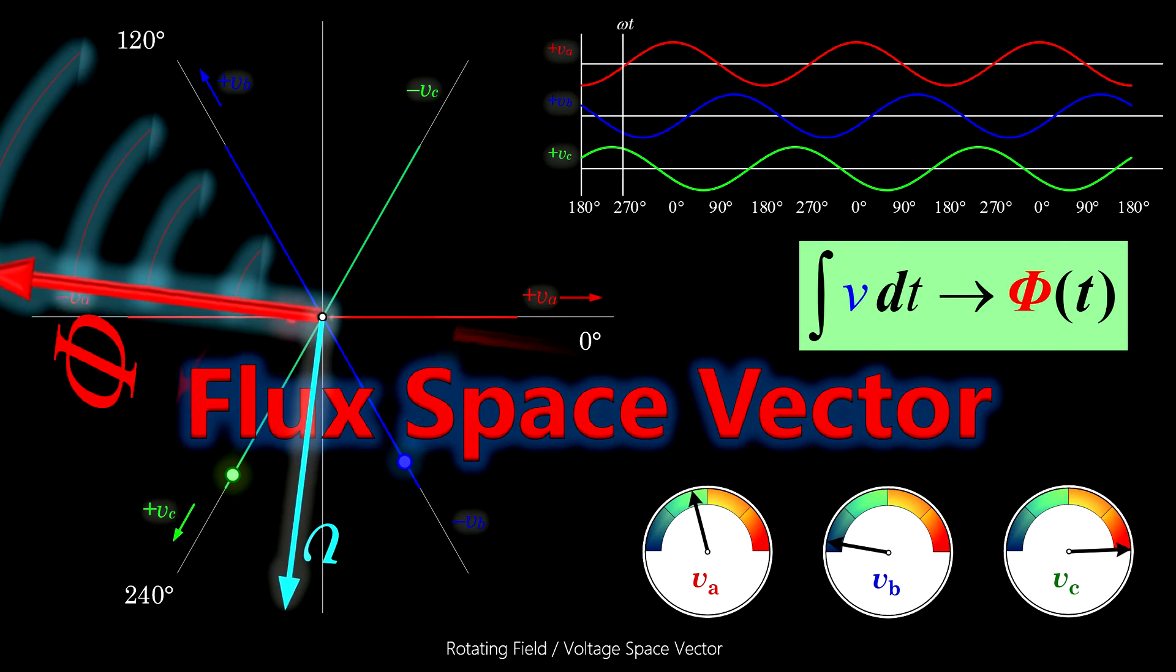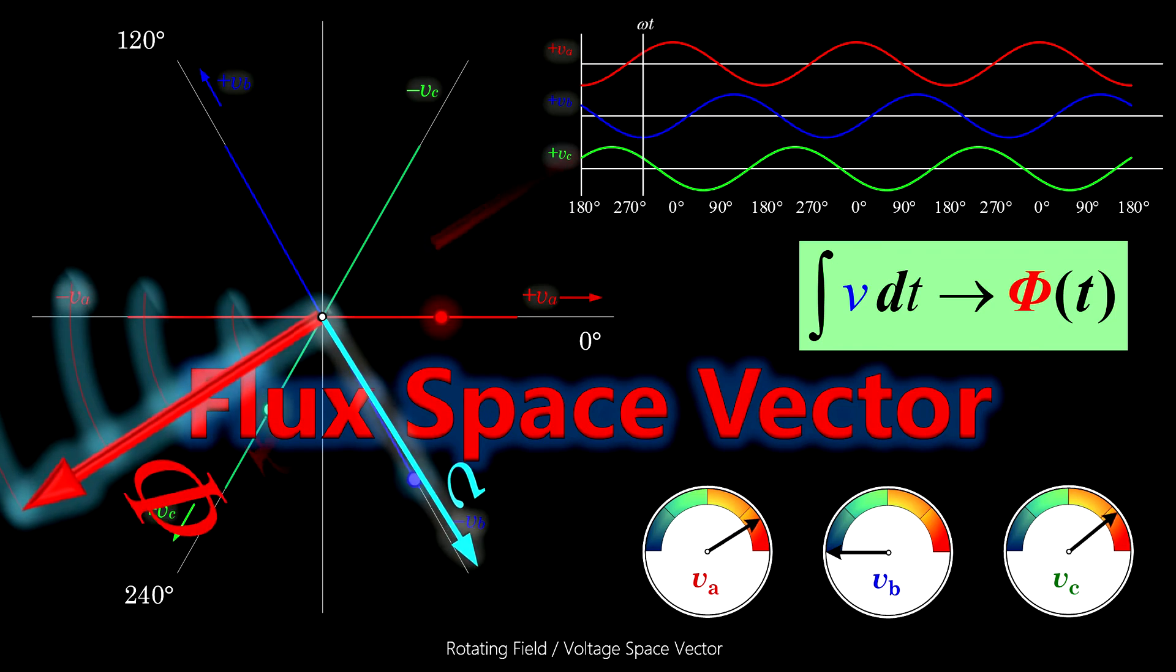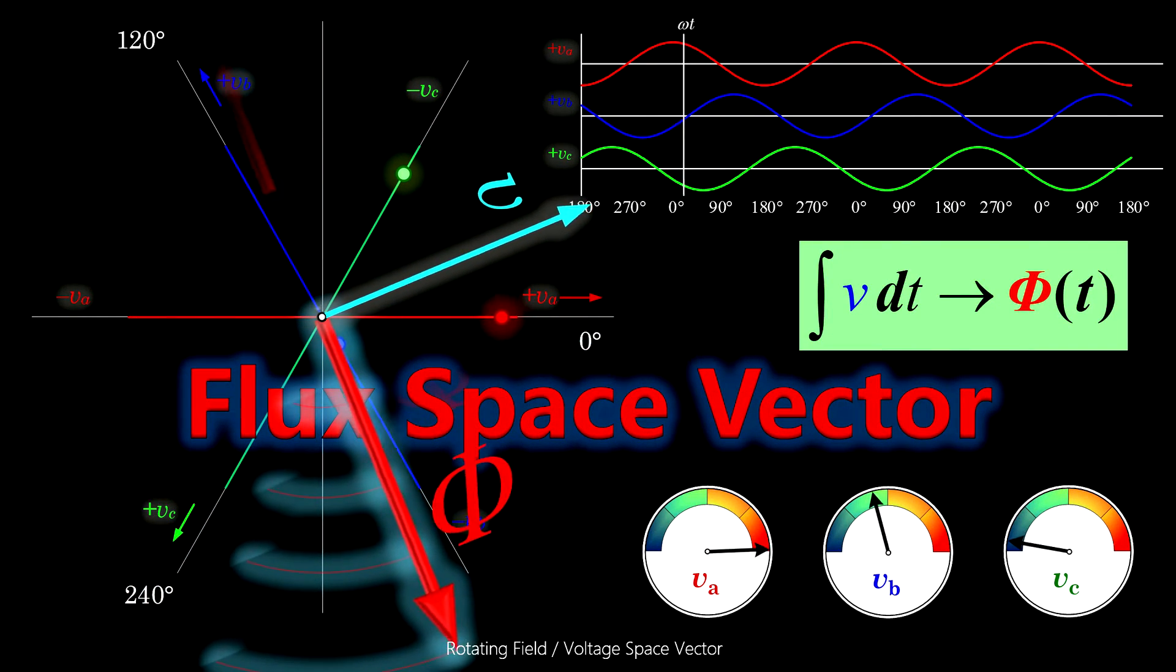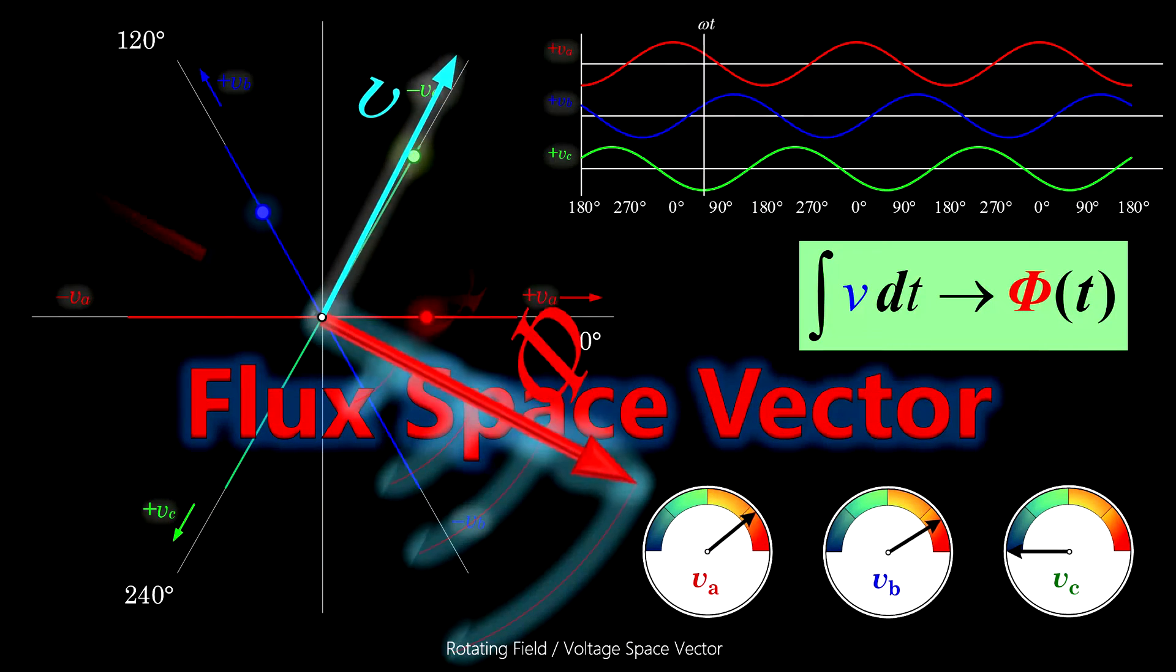Of course, we have to do it separately, one of the three voltages at a time, and add up the three fluxes to one flux vector of constant length.